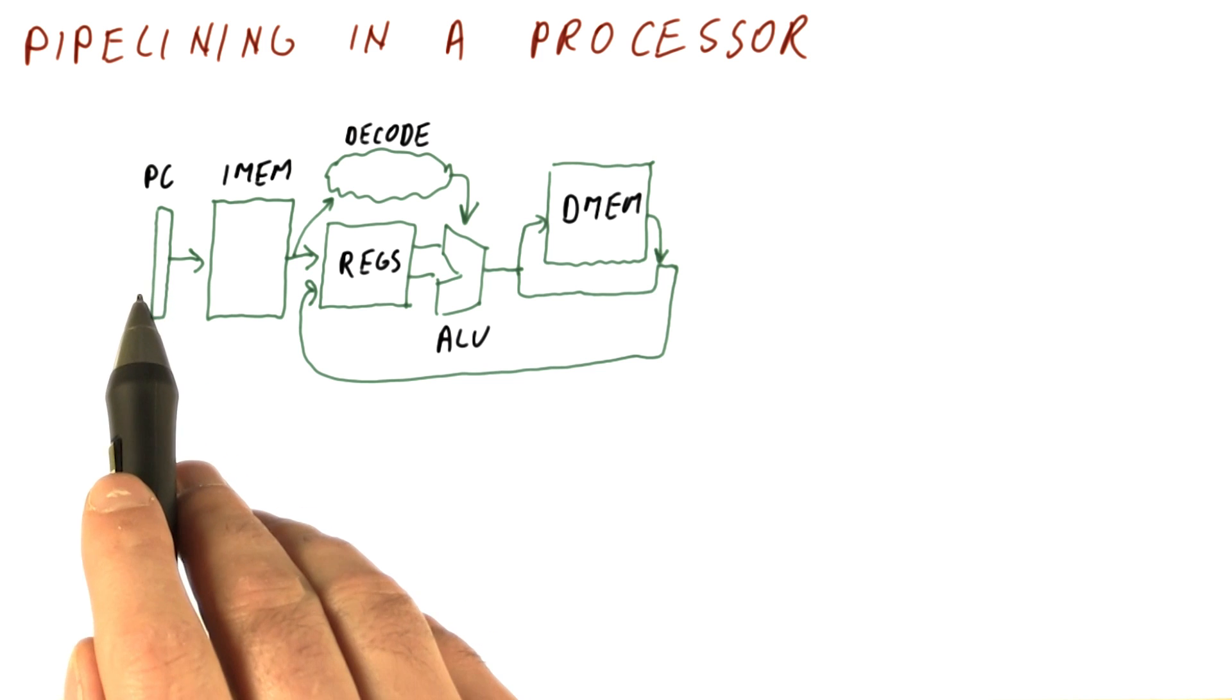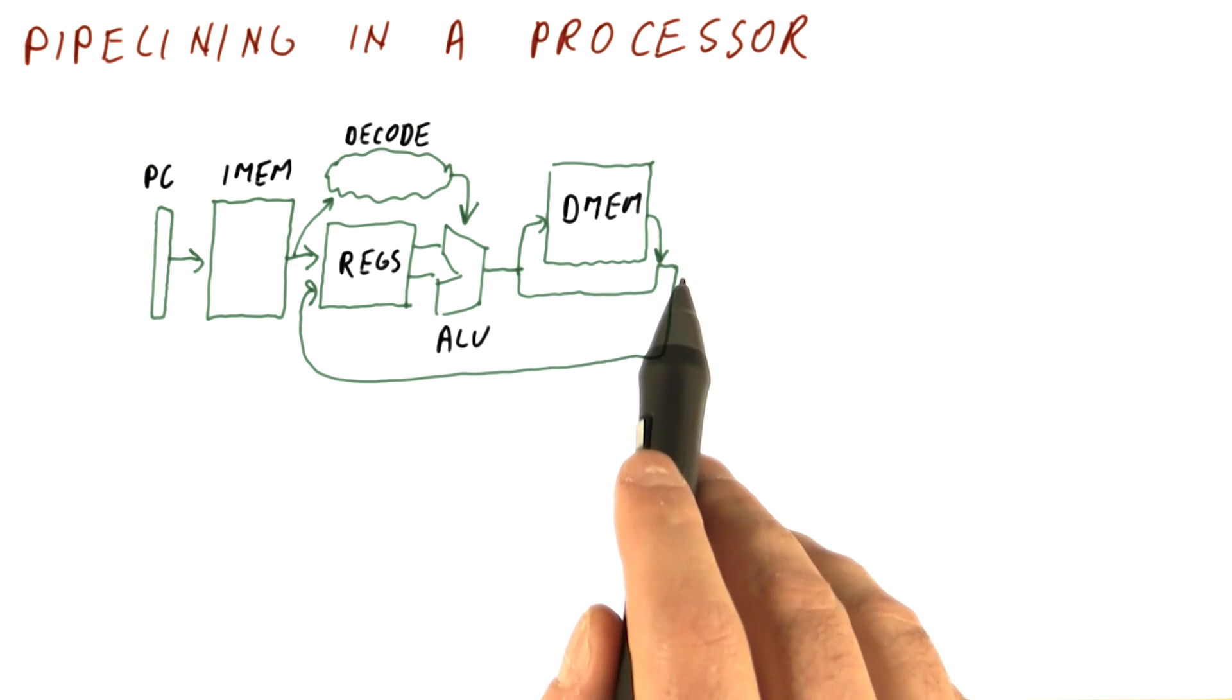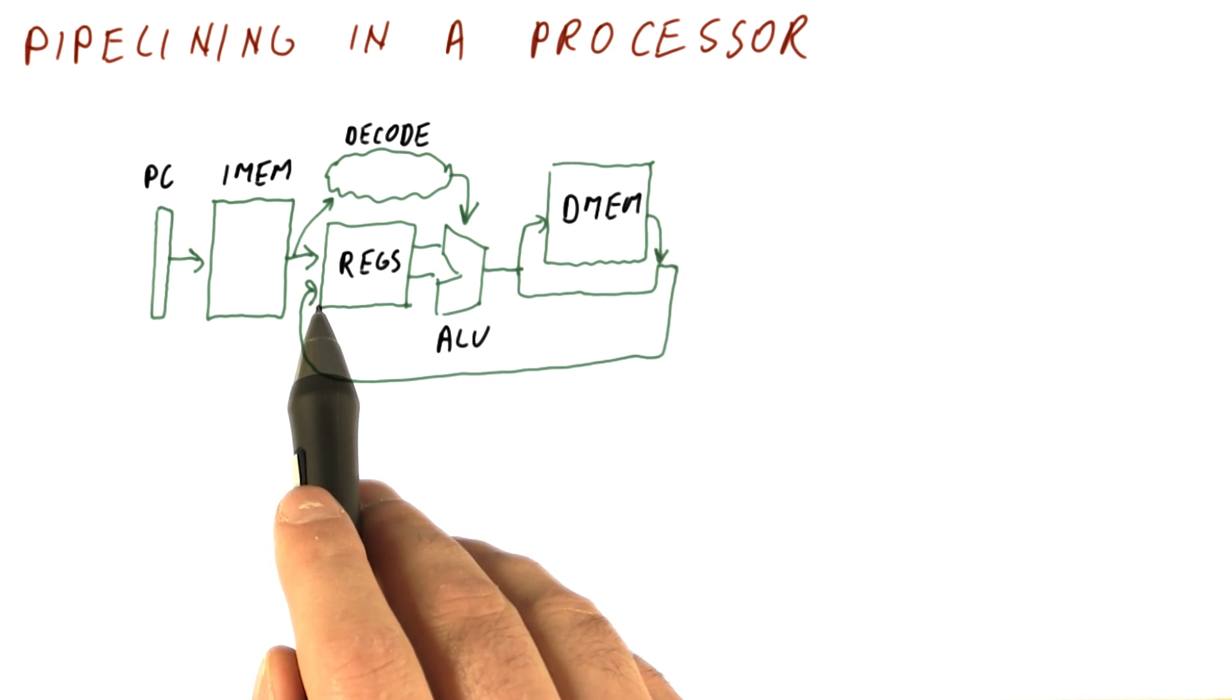Basically, we can do one instruction per cycle by starting at the PC, fetching the instruction, accessing the registers, doing the operation, accessing the data memory, and then writing the result back to registers.